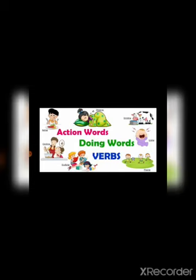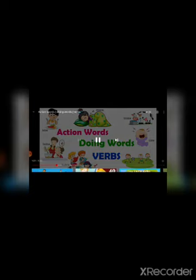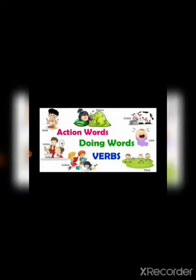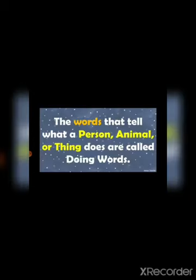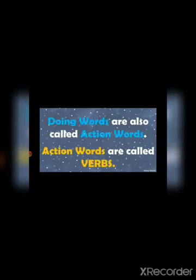Now with the help of a few more examples we will explain this lesson. We will see what are action words and their definition. The words that tell what a person, animal, or thing does are called doing words. Doing words are also called action words, and action words are also called verbs — these are three different names for one thing.